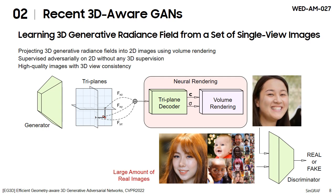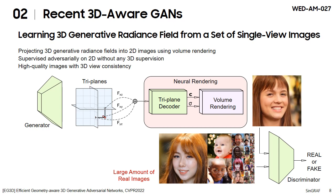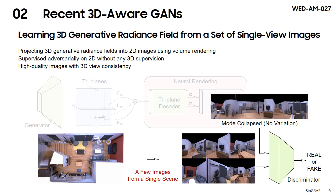However, existing 3D GANs rely on large amounts of training data with diverse images. Directly applying these methods to our problem — using a few images from a single scene — collapses to a single mode without any variations.